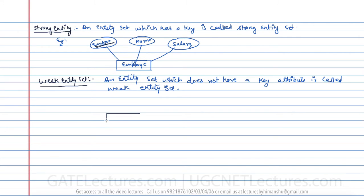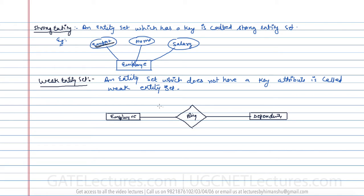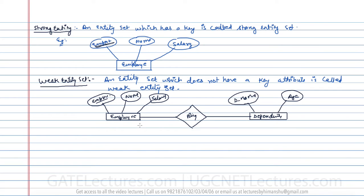Assume we have one entity which is 'Employee' and another entity which is 'Dependents', with a relationship called 'Policy' between them. Employee is having employee number as a key attribute, along with name and salary. For the Dependent entity we have dependent name and age. In the case of the employee entity we have a key attribute which is the employee number, but in the case of the dependent entity we don't have a key attribute.